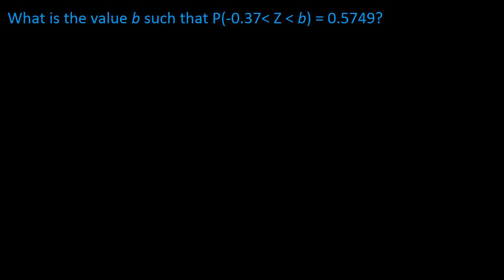This is a question regarding normal distributions. So let's get started. What is the value B such that the probability of some range equals 0.5749?